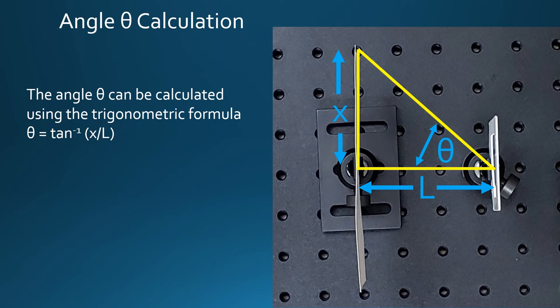The angle theta can be calculated using the trigonometric formula theta equals arctangent of x over L or the inverse tangent of x over L. Now Professor Reed will describe the lab procedure and the process for finding the values for x, L, angle theta, and ultimately the wavelength of the red laser light.